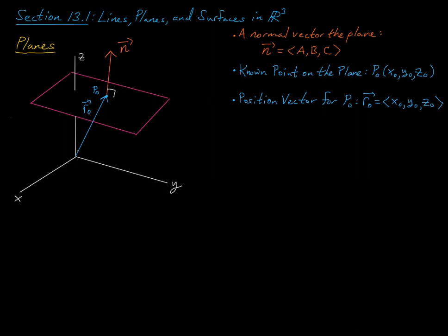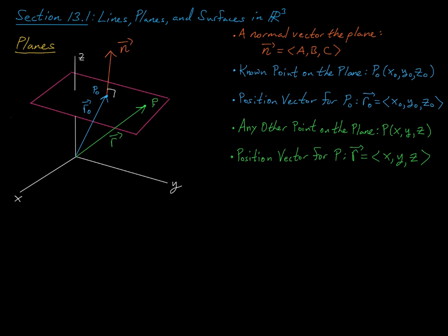The vector r0 has its tail at the origin and its tip at point p0, so its components are x0, y0, z0. Now let p be any other point on the plane with coordinates x, y, z, and its position vector r has components x, y, z. I'd like to relate this point p to the two known quantities p0 and n.